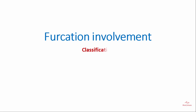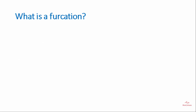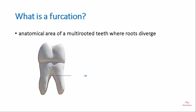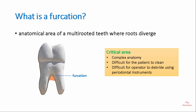Furcation Involvement Classification. A furcation is an anatomical area of a multi-rooted tooth where roots diverge. It is a critical area due to its complex anatomy. It is difficult for the patient to clean, as well as difficult for the operator to debride using periodontal instruments.